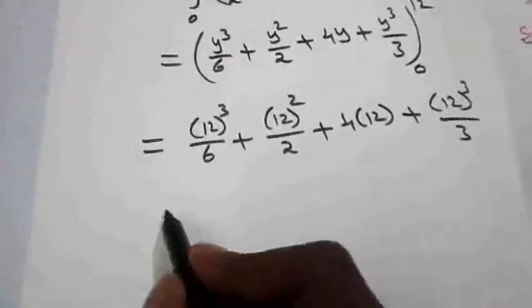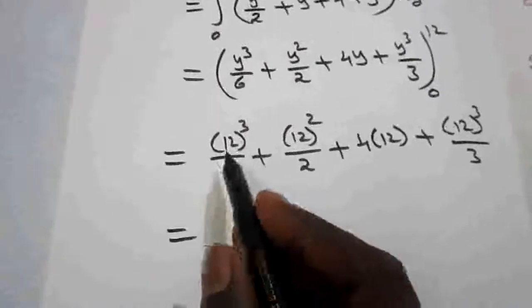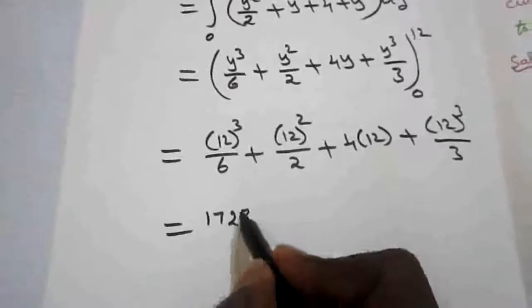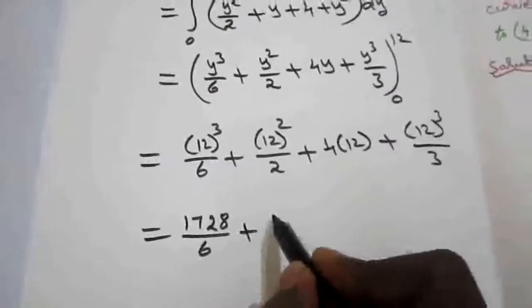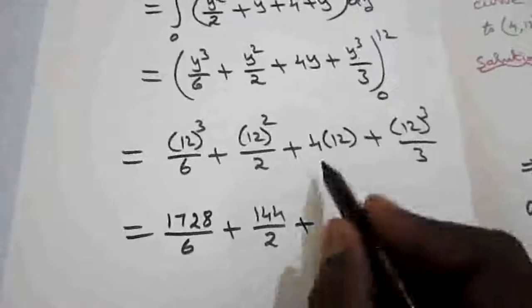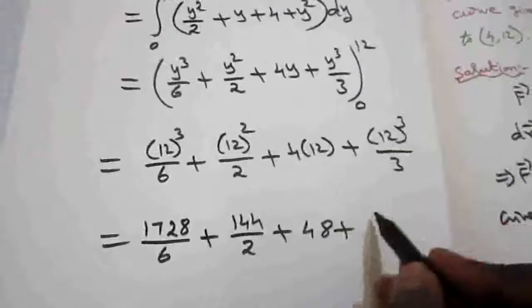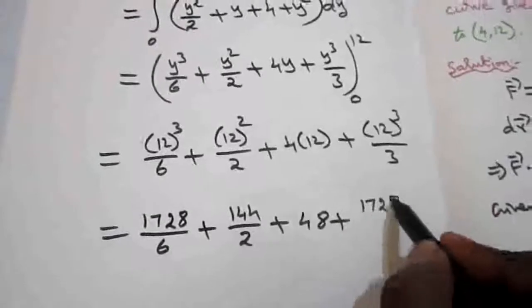So now I am going to simplify. 12³, what is 12³? It is 1728/6 + 12², which is 144/2, plus 12 × 4 is 48, and again 12³ is 1728/3.